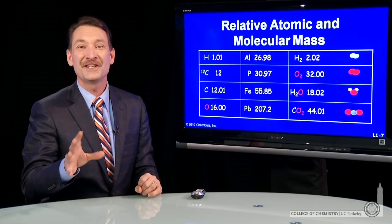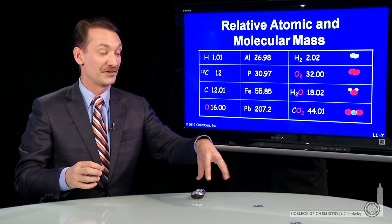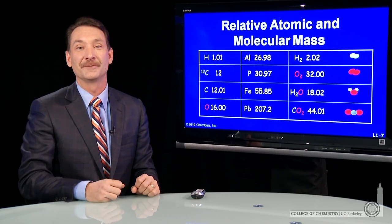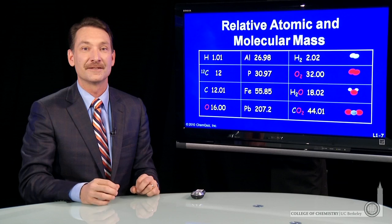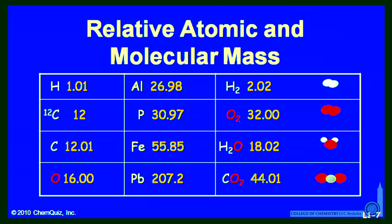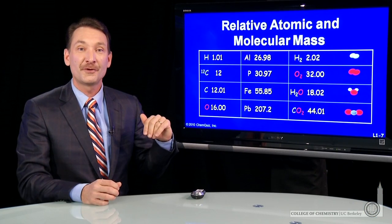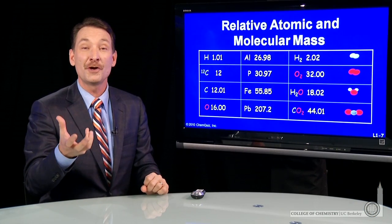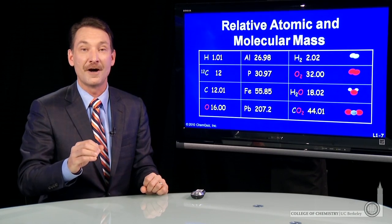In the laboratory, we need a relationship between the microscopic properties, numbers of particles, and the macroscopic properties, the mass that we can measure. We find that using relative masses: we take carbon-12 as the standard and take all other masses relative to that. So 12 grams of carbon-12 has Avogadro's number, 6.02 times 10 to the 23rd particles of carbon-12.